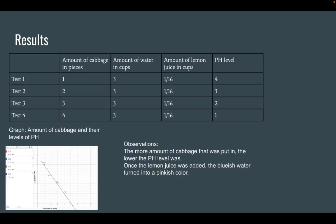The results: test 1 had 1 piece of cabbage and a pH level of 4. Test 2 had 2 pieces of cabbage and a pH level of 3. Test 3 had 3 pieces of cabbage and a pH level of 2. Test 4 had 4 pieces of cabbage and a pH level of 1. They all had 3 cups of water and 1/16th of a cup of lemon juice. The graph below shows the amount of cabbage versus pH levels, with the Y axis showing pH levels and the X axis showing the number of tests, along with a line of best fit. The more cabbage put in showed a darker color and a lower pH level.